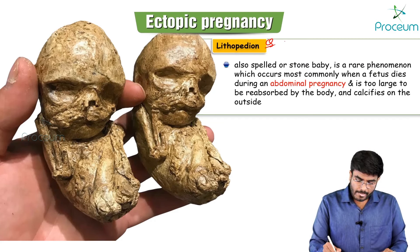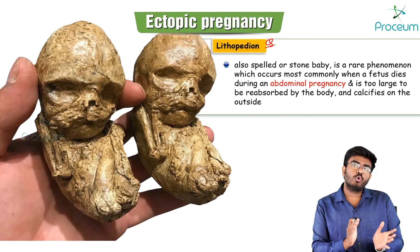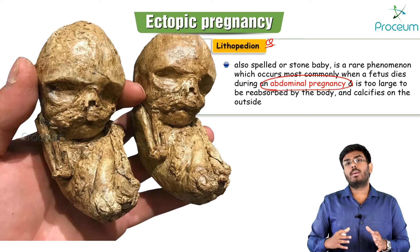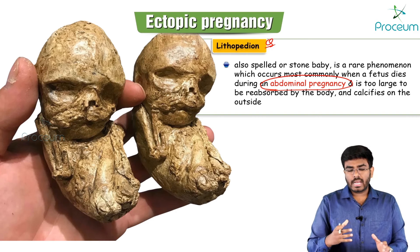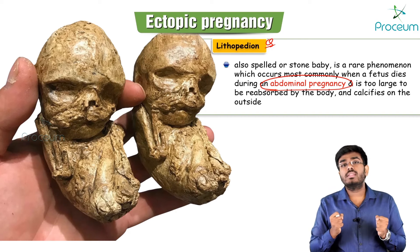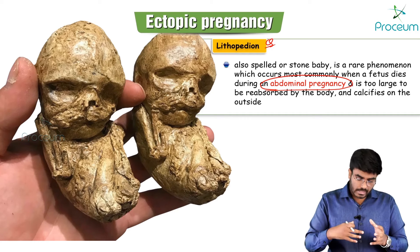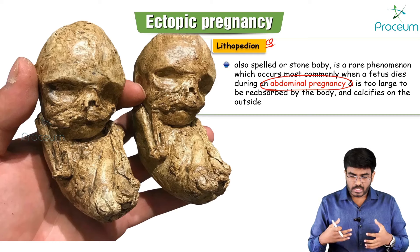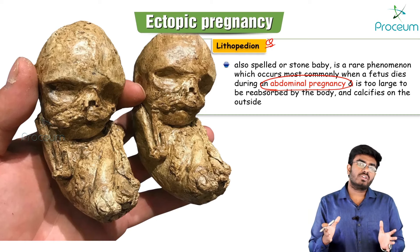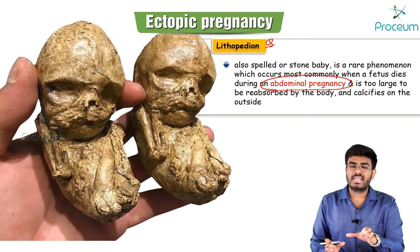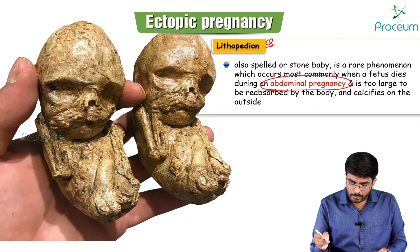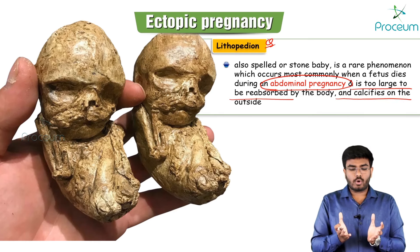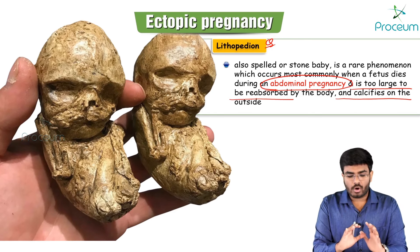Lithopedion, or 'stone baby' (lithos = stone, pedion = baby): this occurs with abdominal ectopic pregnancies. If the abdominal ectopic aborts and the maternal body cannot reabsorb the dead fetus, it becomes calcified over time. It is often discovered incidentally years later on ultrasound as a calcified mass. Lithopedion occurs when the ectopic is too large to be reabsorbed and instead calcifies.